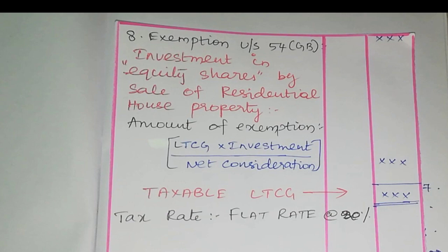From these exemptions, we deduct the amount to arrive at the taxable long term capital gain. This is how we compute long term capital gain. There is not much difference between short term and long term — some exemptions are allowed for short term capital gain and all other exemptions are allowed for long term capital gain. In the next video, we are going to solve problems on capital gain.